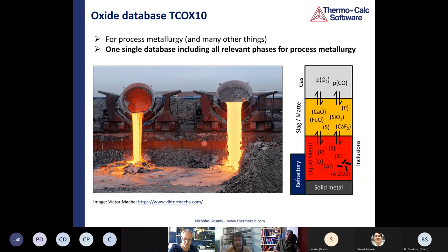Our belief is that it's good to have one single database that includes all the relevant phases for the process that we're looking at. We don't really like mixing various databases, so taking the stoichiometric compounds from one database, the oxide liquid from another database, the metallic liquid from a third database. We believe if all the phases required for certain process are described consistently in a single database, that'll improve the reliability of the simulation.